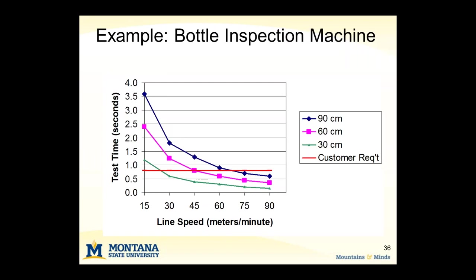Ron Marsilio at Teledyne Benthos shares a story about how his development group was working on a new bottle inspection machine and worked very hard to develop tradeoff curves — a couple dozen around different parameters of their concept — before doing the detailed design work. When they sat down to do the detailed design, it went very quickly. They didn't have any trouble in production or at the beta test sites, and they produced a machine that became a real money winner for their company.